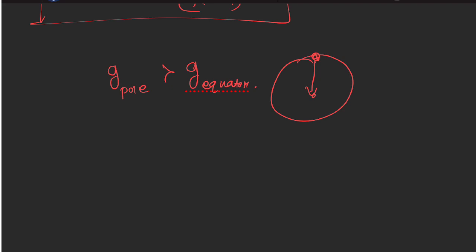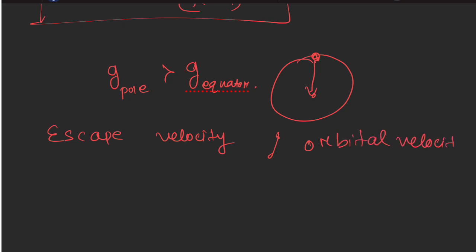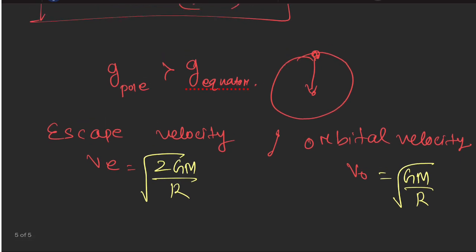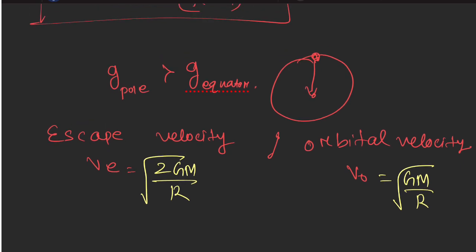Now the important formulas: escape velocity (denoted VE) and orbital velocity (denoted VO). Escape velocity value is √(2GM/r) and orbital velocity value is √(GM/r). You can see that escape velocity is equal to √2 times the orbital velocity.